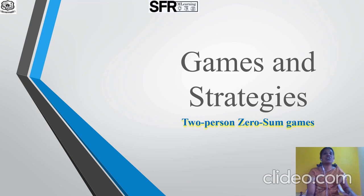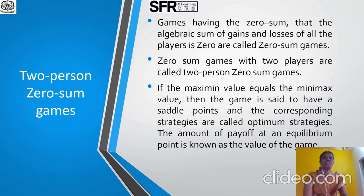In this chapter, we are going to discuss about the section Games and Strategy, subsection 2-Person Zero-Sum Games. Having zero-sum character means the algebraic sum of gains or losses of all players is zero. Zero-sum games with 2 players are called 2-Person Zero-Sum Games. If the Maximin value equals the Minimax value — that is, the Maximum of Minimum Row Value equals the Minimum of Maximum Column Value — then the game has a saddle point and the corresponding strategies are called Optimum Strategies. The amount of payoff at an equilibrium point is known as the value of the game.